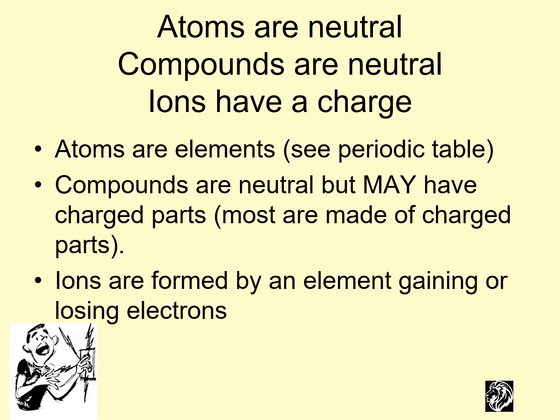So atoms are neutral because they have the same number of protons and electrons. Compounds are also neutral. This word ion, ions are things that have charge. So atoms are elements on the periodic table, those are neutral elements. Compounds are neutral, but it's more than one element made into a compound with a bond. They could have parts that are charged, but those charged parts cancel out to be neutral.